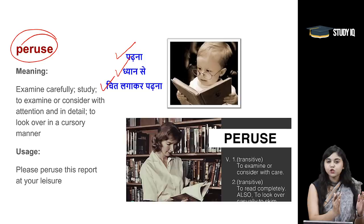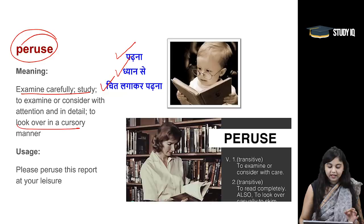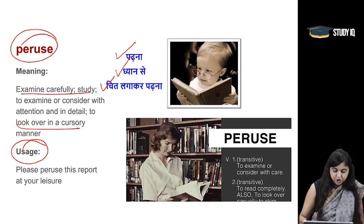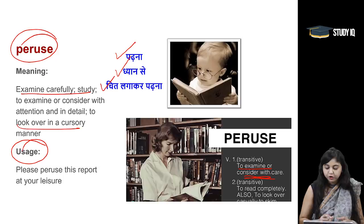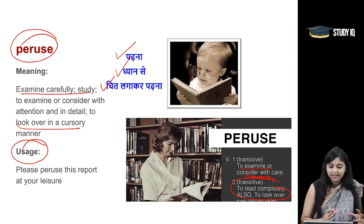Or doosra arth jo hai, when you're trying to give a cursory look — bilkul aap casual look de rahe hai. So, to examine or to consider with attention and detail. Or iska doosra arth ho jata hai, isi ka opposite: to look over in a cursory manner. Peruse kai baar hum emails mein bhi use karte hai — 'this mail has been for your perusal,' that means aap kisi ko dikha raha hai so that they can keep a note of it. Let's look at the usage: please peruse this report at your leisure. So, peruse ke do arth hain — when you're examining something with care, aur second iska arth hota hai when you're just trying to casually skim over something.